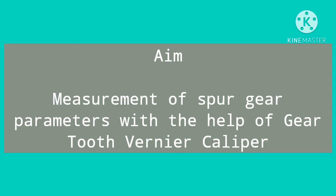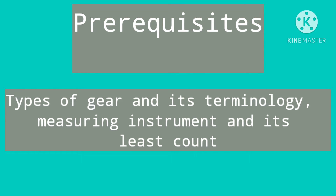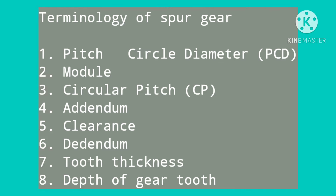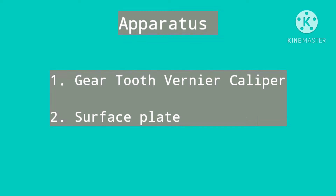The aim of today's practical is measurement of spur gear parameters using a gear tooth vernier caliper. Prerequisites include gear types, gear terminology, and instrument least count. Objectives include selection of tool and technique for determining dimensions of spur gear terminology: pitch circle diameter, module, circular pitch, addendum, clearance, dedendum, tooth thickness, and tooth depth. Apparatus required: gear tooth vernier caliper and surface plate.